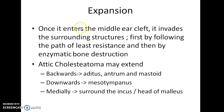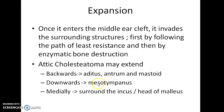Once a cholesteatoma enters the middle ear cleft, it invades the surrounding structures — first by following the path of least resistance, and then by enzymatic bone destruction. An attic cholesteatoma may extend backwards into the aditus, antrum and mastoid, downwards into the mesotympanum, and medially to surround the incus or head of malleus.